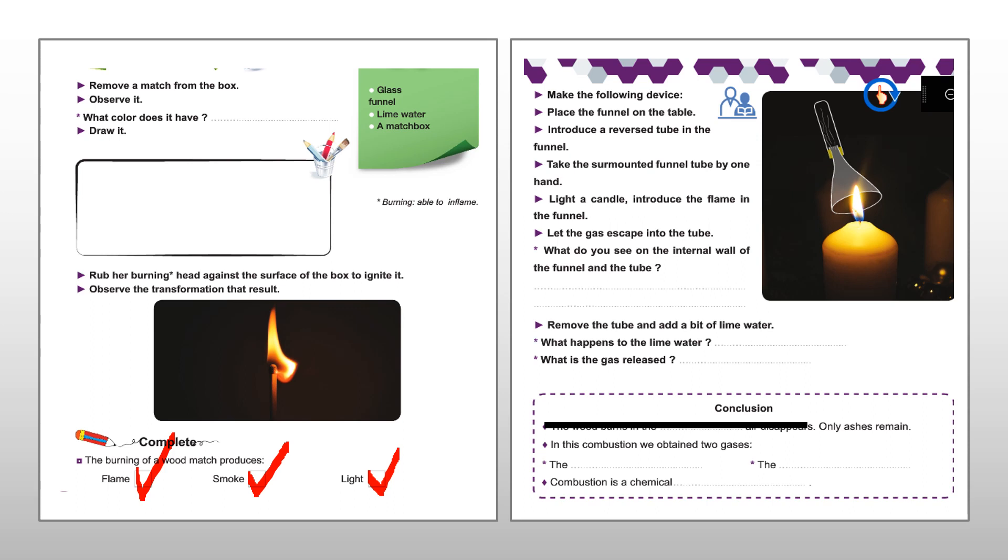Conclusion. In the first line, we have a mistake. So, cut this line as I did. In a complete combustion, only ashes remain. In this combustion, we obtain two gases that are carbon dioxide gas and the water vapor.